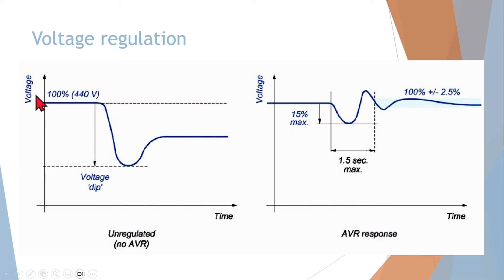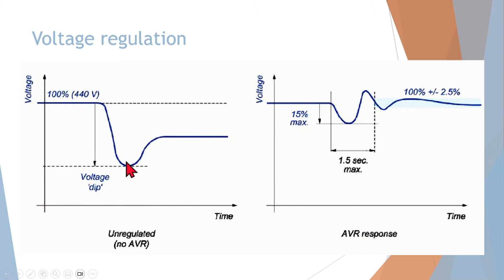In a bus bar system without an AVR, if we consider a voltage variation — for example, starting a high load like a large electrical motor — it will cause the voltage to reduce considerably. We call this a voltage dip. This is not good because your sensitive components might get damaged, lights might get burned, and motor speeds will be reduced, creating many operational problems on normal operating components like peripherals and other machinery.